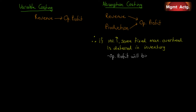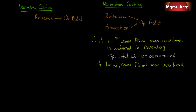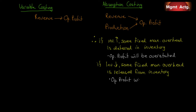So operating profit will be overstated — but that is not a statement of fact, that is a statement of opinion. From those who argue that variable costing is superior, they point out that operating profit will be overstated in periods where inventory is building. If inventories decrease, then some fixed manufacturing overhead cost that was deferred in a previous period is now released from inventory, and the opinion is that operating profit will be understated. What I'm writing — that operating profit will be overstated or understated — is not a statement of fact; it is a statement of opinion. It depends on what you mean by overstated or understated.